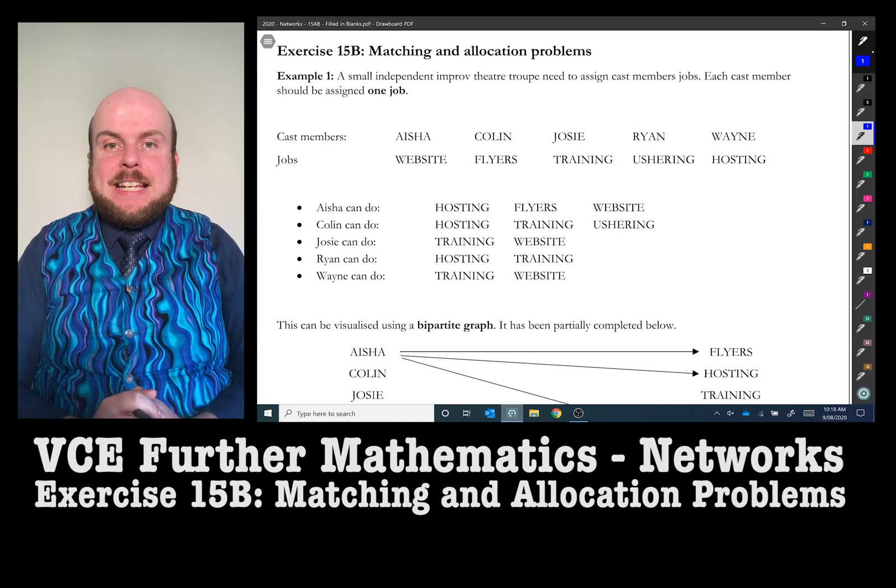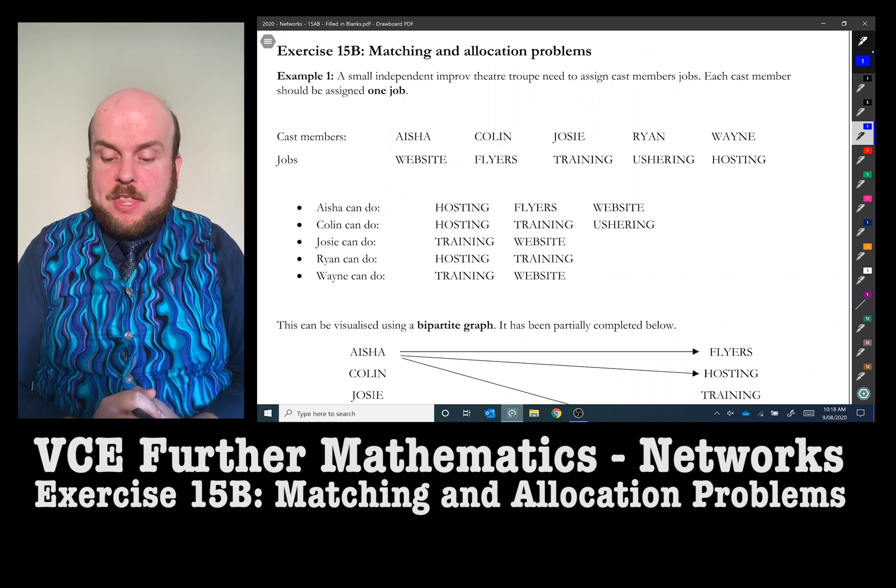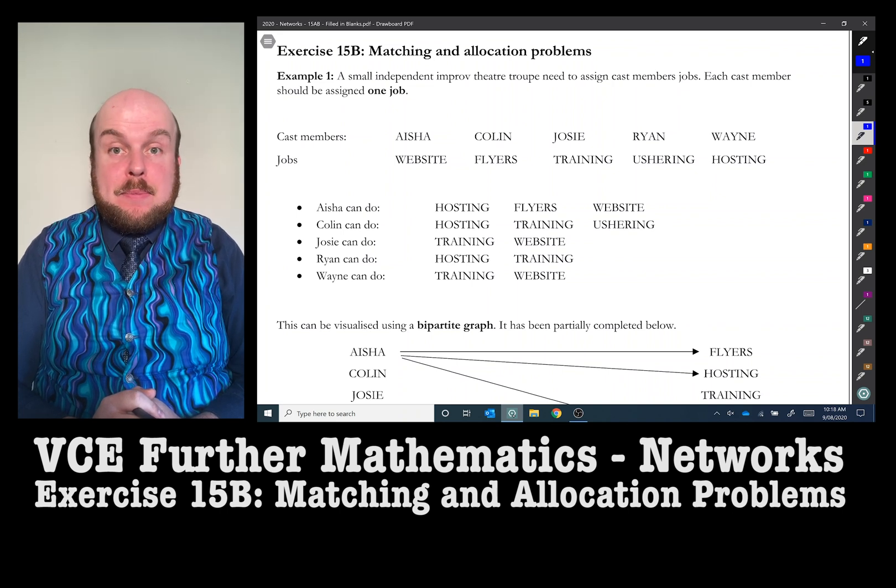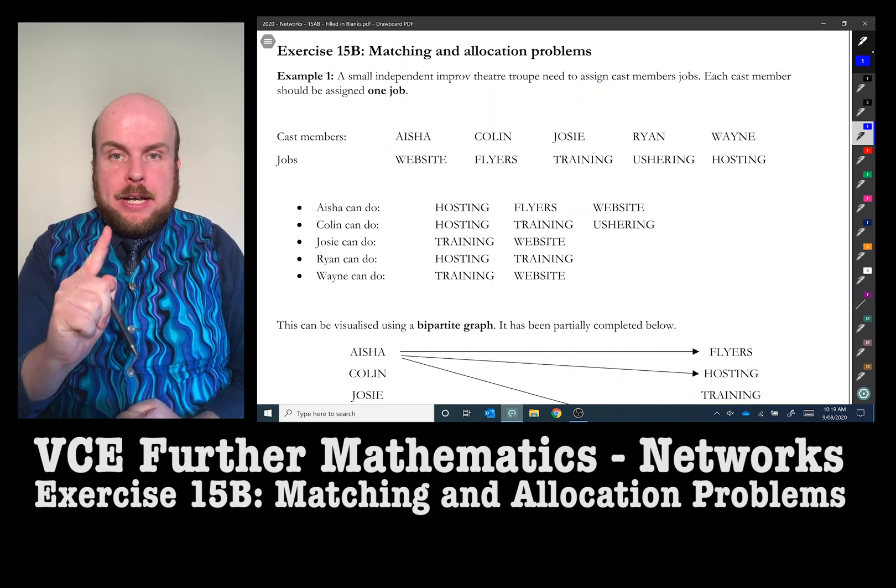Exercise 15b, matching and allocation problems. I have a small independent improv theatre trip that need to assign cast members different jobs. Each cast member should be assigned to only one job.